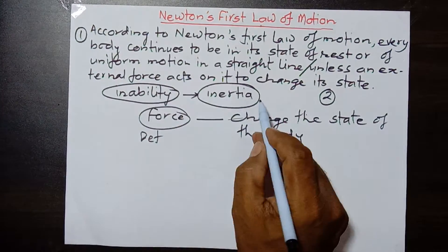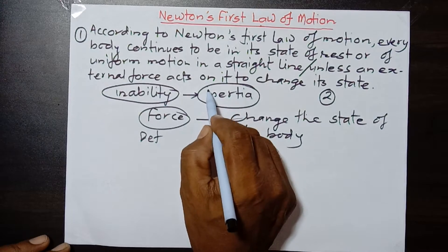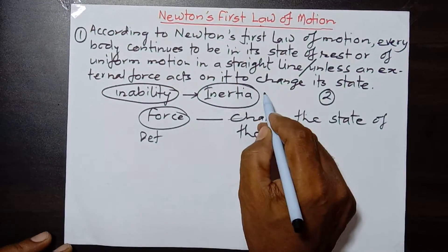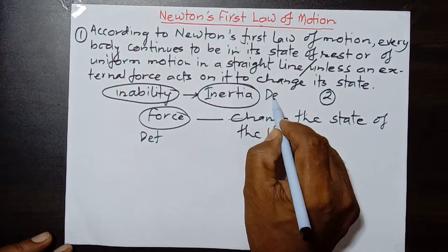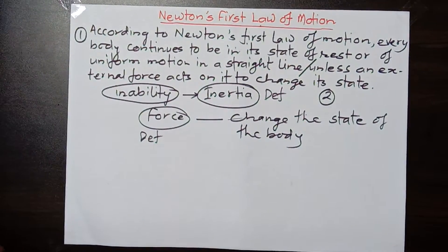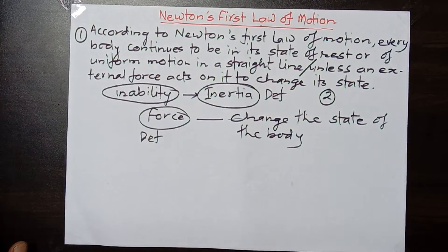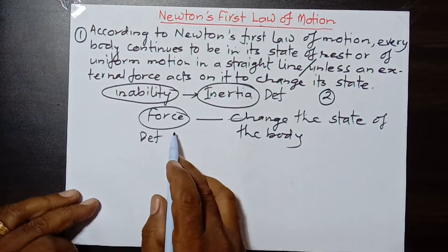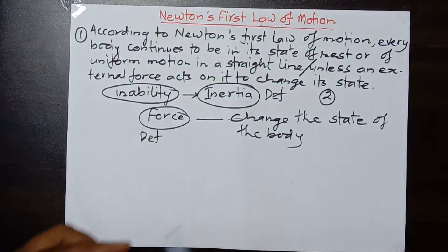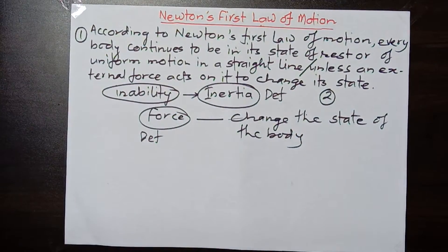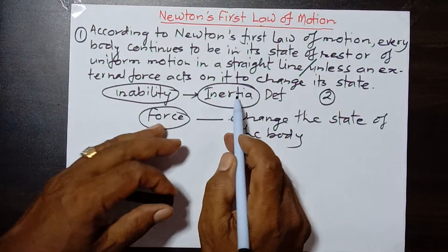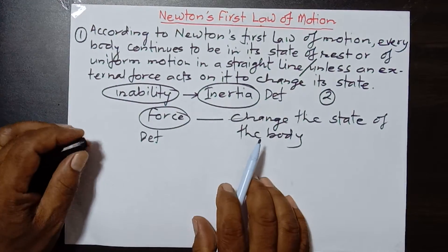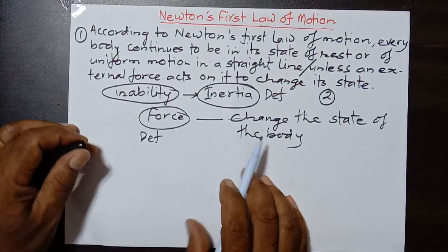So Newton's first law gives the qualitative definition of force. The first part tells us about inertia — it defines inertia. The second part says that force is an agent that can change the state of the body. Now I want to tell you a little more detail about what inertia is.